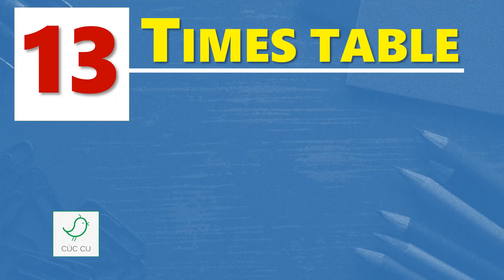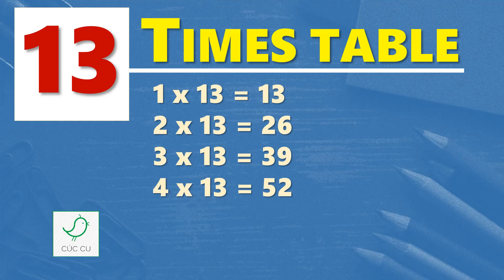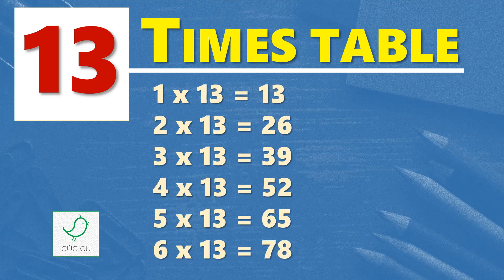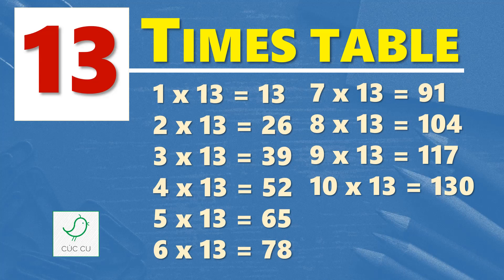Thirteen times table. One times thirteen is thirteen, two times thirteen are twenty-six, three times thirteen are thirty-nine, four times thirteen are fifty-two, five times thirteen are sixty-five, six times thirteen are seventy-eight, seven times thirteen are ninety-one, eight times thirteen are one hundred and four, nine times thirteen are one hundred and seventeen, ten times thirteen are one hundred and thirty.